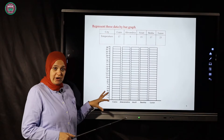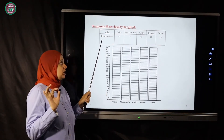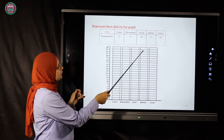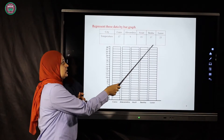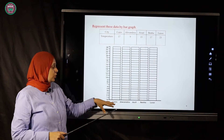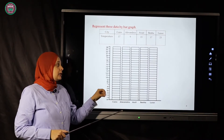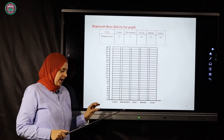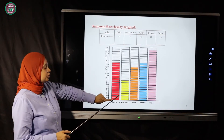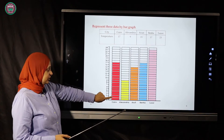We have an empty bar graph. The numbers represent temperatures for each city in Egypt: Cairo 17, Alexandria 9, Asyut 15, Banha 17, Luxor 23. I have all the temperatures and I am going to draw and color each one on the bar graph to represent the data.